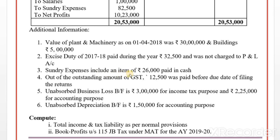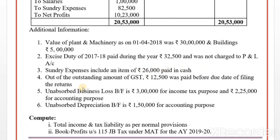Sundry expenses include an item of Rs. 26,000 paid in cash. Since it exceeds the limit for cash payment, it is disallowed. However, this goes only in step number one — it does not appear in the book profit computation under step three and four.